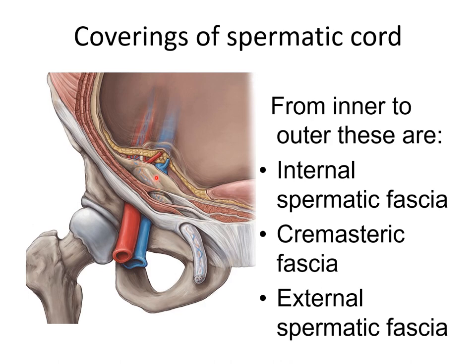The first innermost layer is derived when it passes through the fascia transversalis, that is through the deep inguinal ring — this is the internal spermatic fascia. Next, when it passes through the muscle bulk, mainly the internal oblique muscle, it derives the cremasteric fascia. And lastly, when it passes through the superficial inguinal ring, through the aponeurosis of the external oblique muscle, it derives the external spermatic fascia.